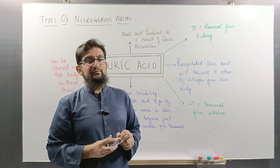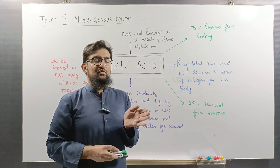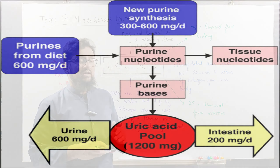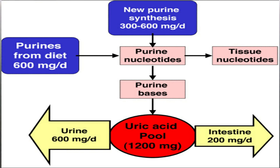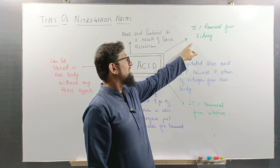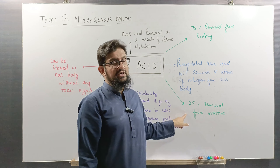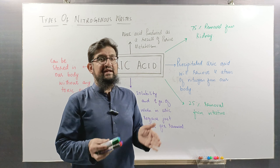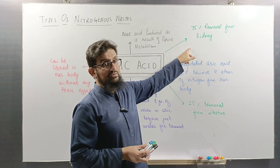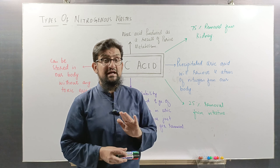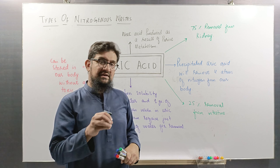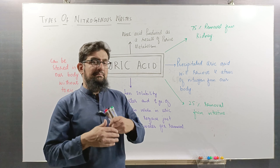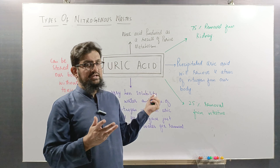Our body does not store uric acid if the amount produced remains within the limit of our homeostatic capacity. If we are not producing too much uric acid, 75% of it is removed through the kidney and 25% is removed through the intestine. So 100% of uric acid produced within the normal metabolic range is excreted through either the kidneys or the intestine, with no risk of deposition. Uric acid only accumulates in the body if production becomes very high, which then leads to gout.